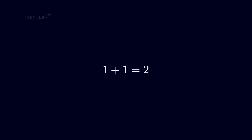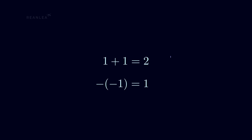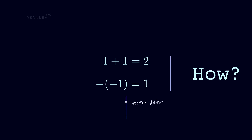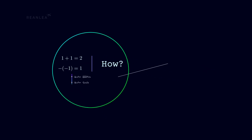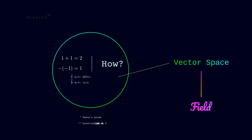We know that 1 plus 1 is equal to 2, and minus of minus 1 is equal to 1. But how do these identities play crucial roles in the construction of vector addition and scaling a vector? How does this further help to establish the concept of a vector space over a field — where vector spaces and fields are essential mathematical structures — and how can we get the notion of a field? Understanding the fundamentals of 1 plus 1 also provides insights into Peano's axioms and how natural numbers are constructed.